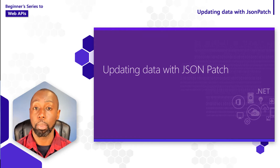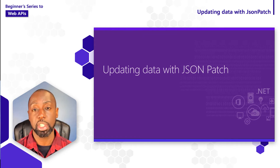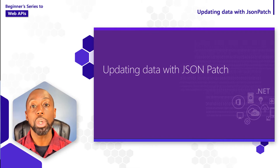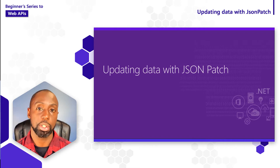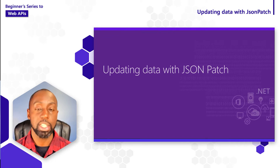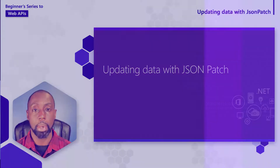That means that for PUT requests, we usually have to contain that entire resource inside of the message body, but for PATCH, we just have to define the individual properties and the associated update operation. In this video, I want to show you how we can apply some of those incremental updates using something called JSON Patch.